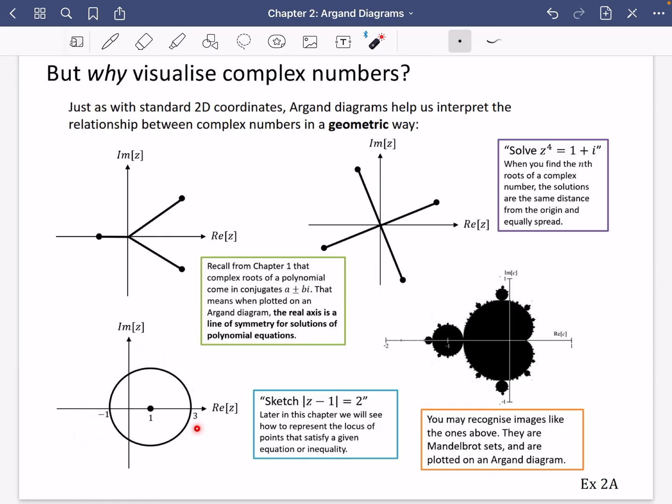Later on in this chapter, we will see that you can do sketches of some loci and you get some really interesting properties of things like circles appearing. And this is from year two. This is roots that you can do complex roots of, nth roots of complex numbers. When you solve equations like this, z to the power of 4 equals 1 plus i, the roots are spread out equally. They are the same distance from the origin, and they are equally spread out around. So you can see all of these angles here must be 90 degrees. And unsurprisingly, it's 90 degrees because it's the power of four.